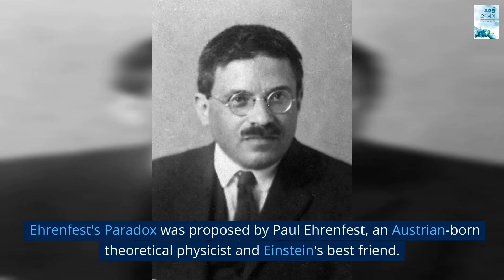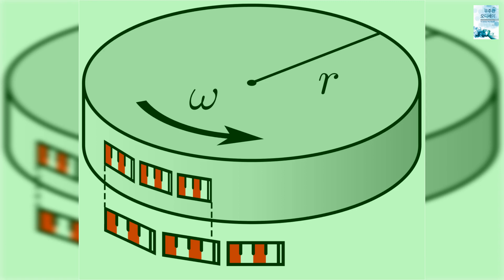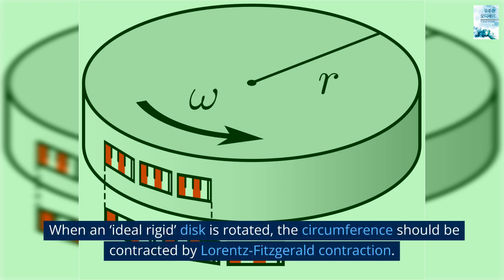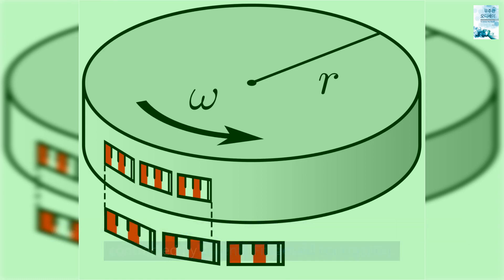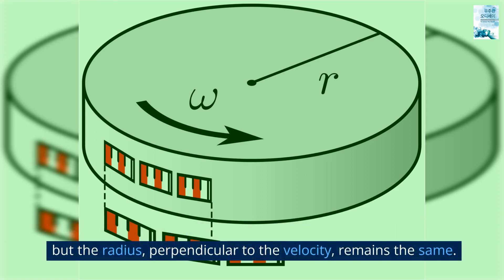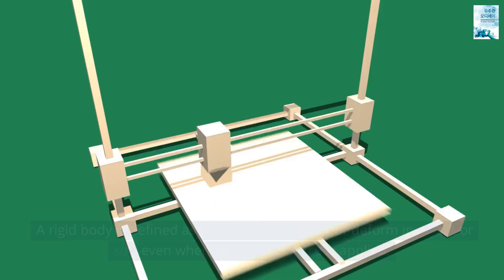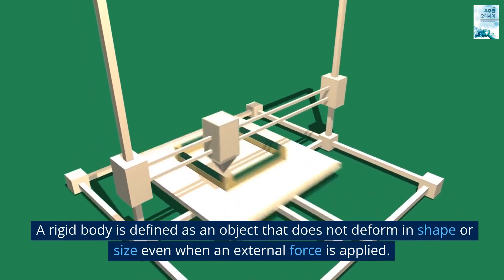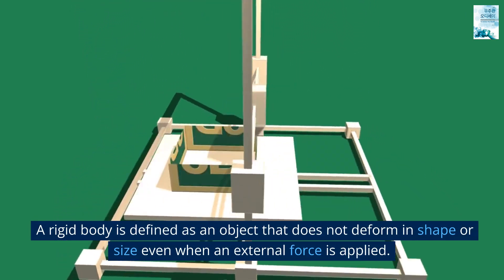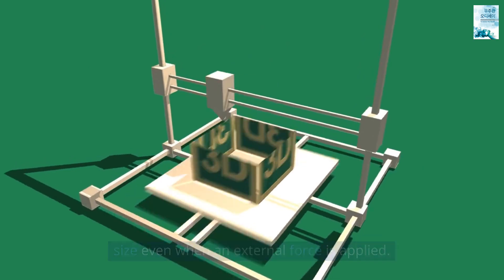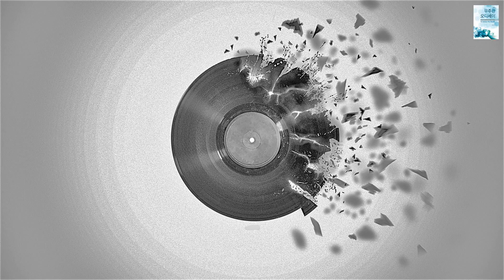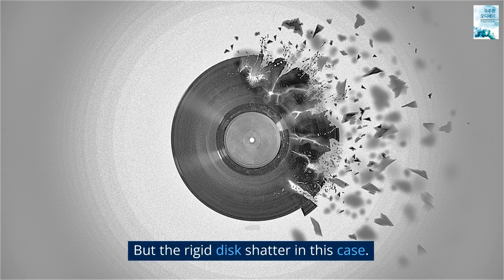Ehrenfest's paradox was proposed by Paul Ehrenfest, an Austrian-born theoretical physicist and Einstein's best friend. When an ideal rigid disc is rotated, the circumference should be contracted by Lorentz-Fitzgerald contraction. But the radius, perpendicular to the velocity, remains the same. So the rotating rigid disc should shatter. A rigid body is defined as an object that does not deform in shape or size even when an external force is applied. But the rigid disc shatters in this case.